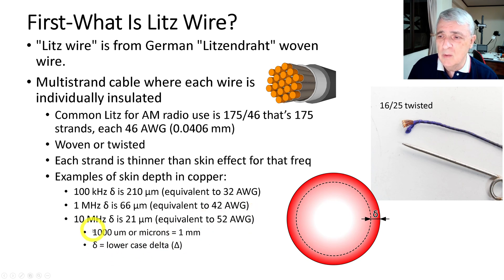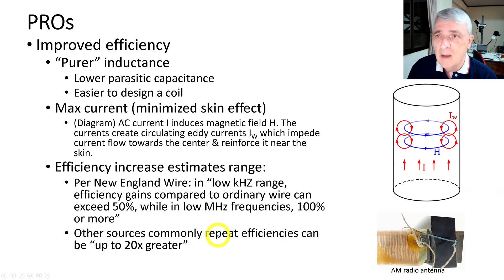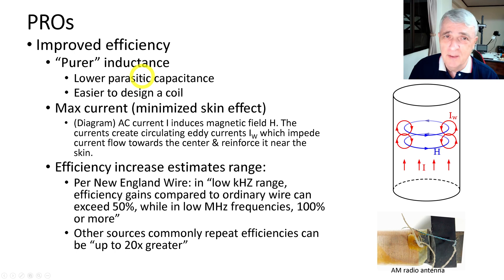For reference, 1000 microns is one millimeter, so we're talking about very small stuff. So why do we use litz wire? The answer is improved efficiency — you get pure inductance.